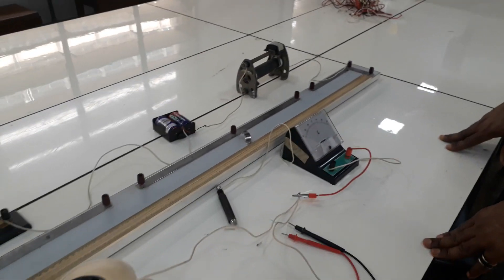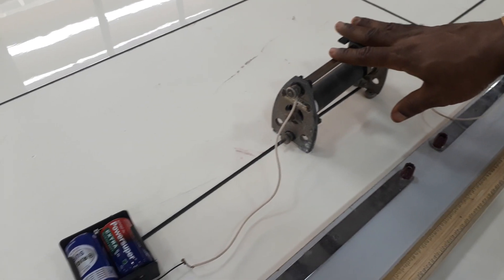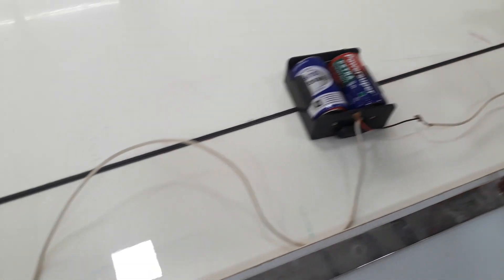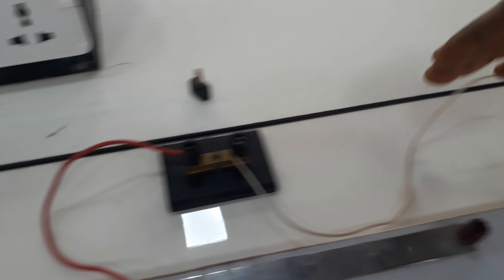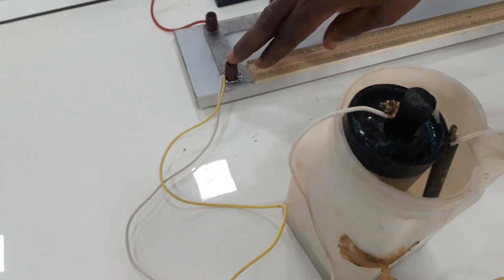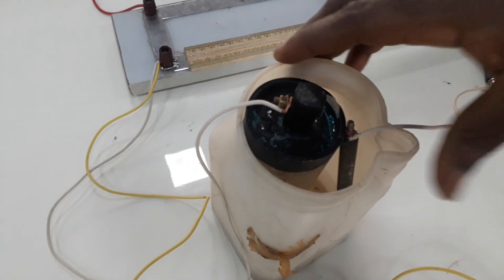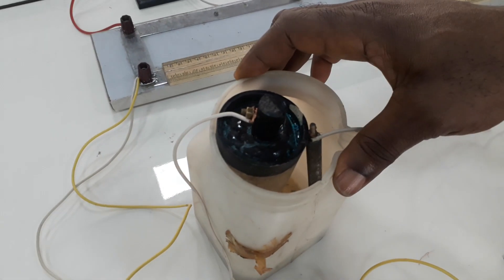So here I have already connected the apparatus. I have my rheostat connected to the cell, the dry cell, to the negative part. Then from the positive, it is connected to my K1. From my K1, it is connected to my potentiometer. From my potentiometer, it is connected to the wet cell, that is my Leclanche cell.